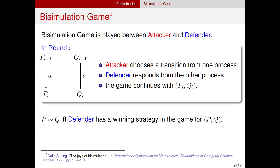Before moving to the reduction, let's see a game characterization of the bisimilarity problem called the bisimulation game. The game is played between two players: attacker and defender. The attacker tries to prove a pair of processes are not bisimilar, and the defender tries to prove the other side. In each round, the attacker can choose a process and a transition, and the defender responds with the same action from the other process. The defender wins if she never gets stuck; otherwise the attacker wins. If two processes are bisimilar, the defender has a winning strategy; otherwise the attacker has a winning strategy.